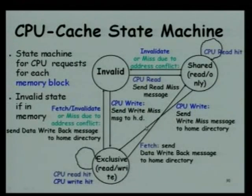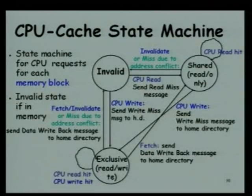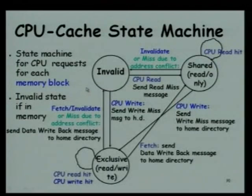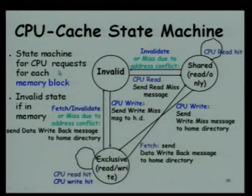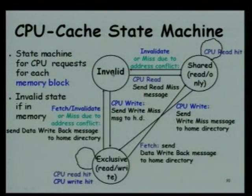The memory controller will have the necessary information about each page, and that is why we cannot really distinguish between a local and a remote access. We will draw it on one diagram. In the Snoopy case, one FSM corresponded to local access and another for data on the bus. Here, all requests come through the memory controller, since the data is maintained there. We distinguish the states as invalid, shared, and exclusive.